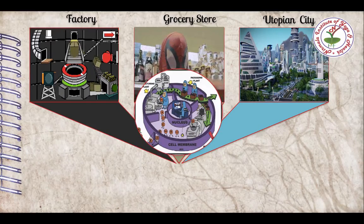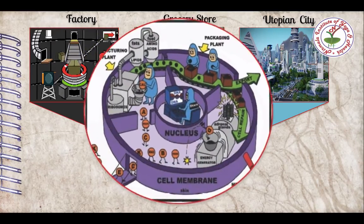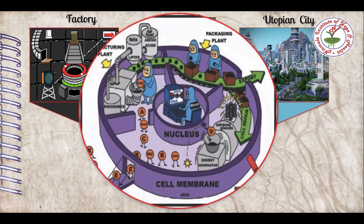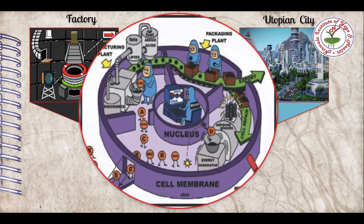Each cell has its own factory, but the cells cannot function alone. They rely on one another for supply of raw materials, waste removal, and energy generation. The whole process for supply of raw materials, waste removal and energy generation is a form of metabolism. The manufactured products of the cell are stored in different organs of the body as the grocery store of the city. The whole body functioning, maintenance and organization is like a utopian city.